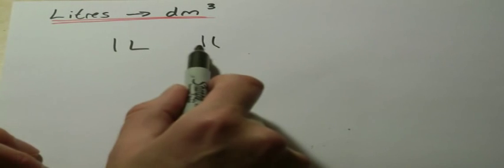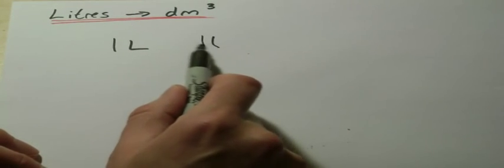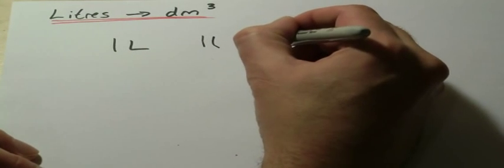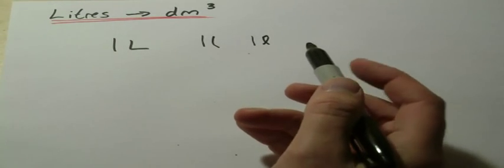A liter has the symbol of a capital L, but you'll also see it written with a small L. Now that can be confusing when it's written down—it looks maybe like 11. Sometimes people do a kind of cursive L to make it clearer. What you'll tend to find chemists, biologists, and scientists do instead of using this symbol, they will use decimeters cubed, dm³.